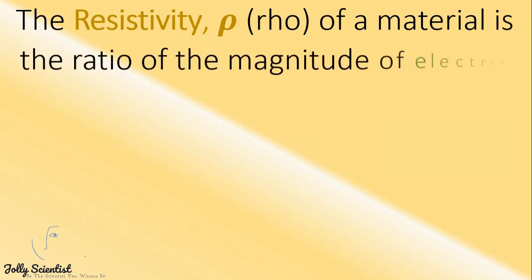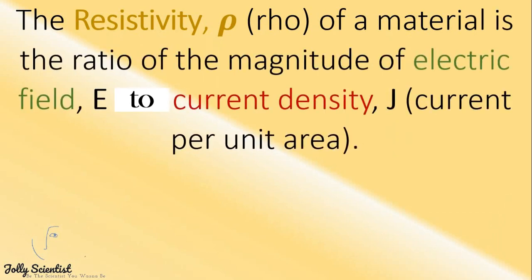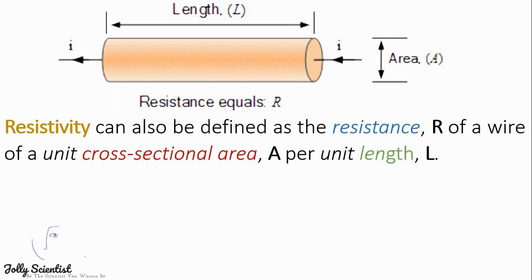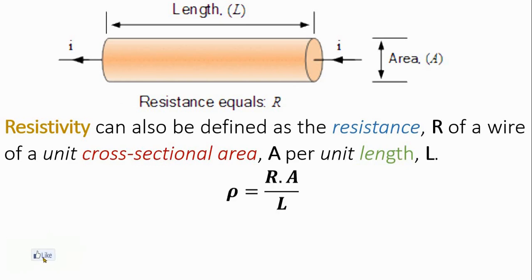So what is resistivity? The resistivity of a material is the ratio of the magnitude of the electric field E to the current density J — that is, the current per unit area. So, rho equals E divided by J. The resistivity of a material can also be defined as the resistance R of a wire of unit cross-sectional area A per unit length, that is rho equals R times A divided by L.